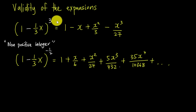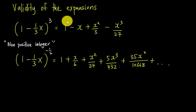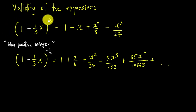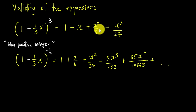If the power is a positive integer, you do not need to find any range value for x for a valid expansion, because your expansion is exactly the same as the bracket. If you insert the bracket equation into your graph calculator and you insert the expansion like 1 minus x plus x squared over 3 minus x cubed over 27, both of them are exactly the same graph, meaning they share every single x and y point.